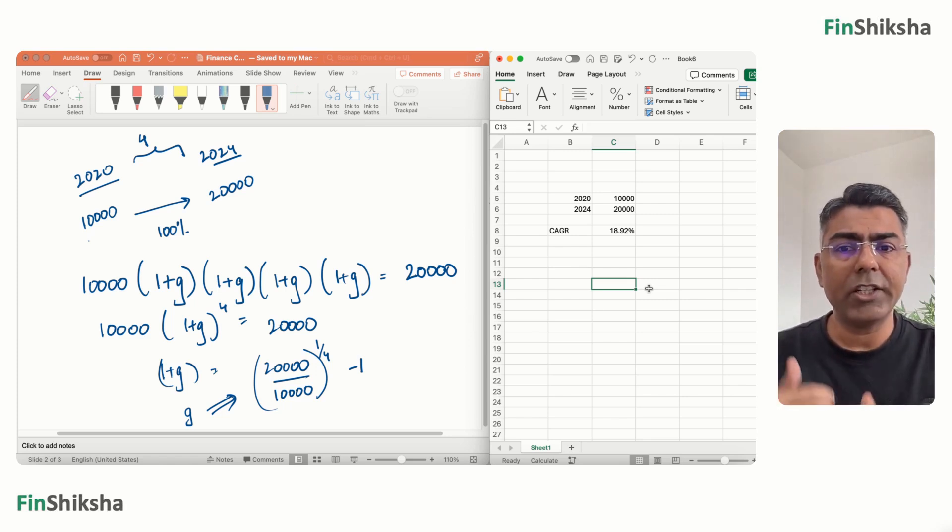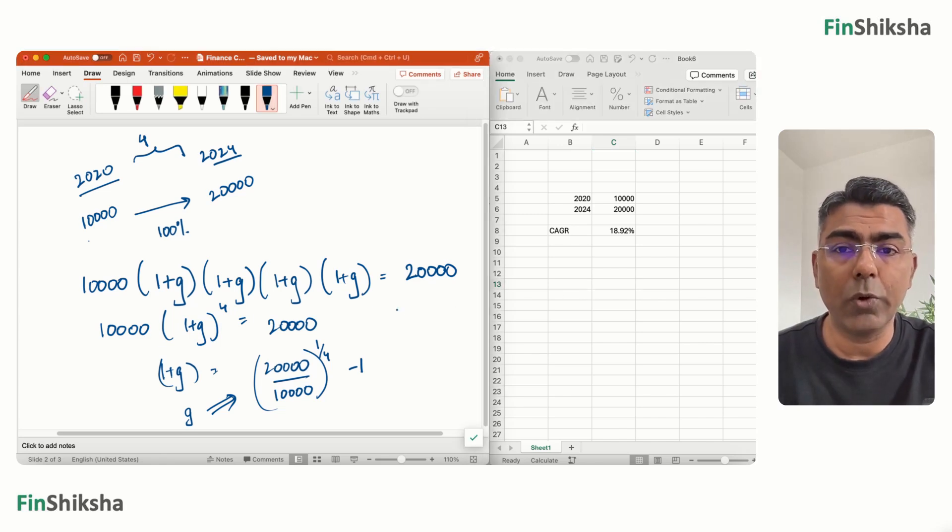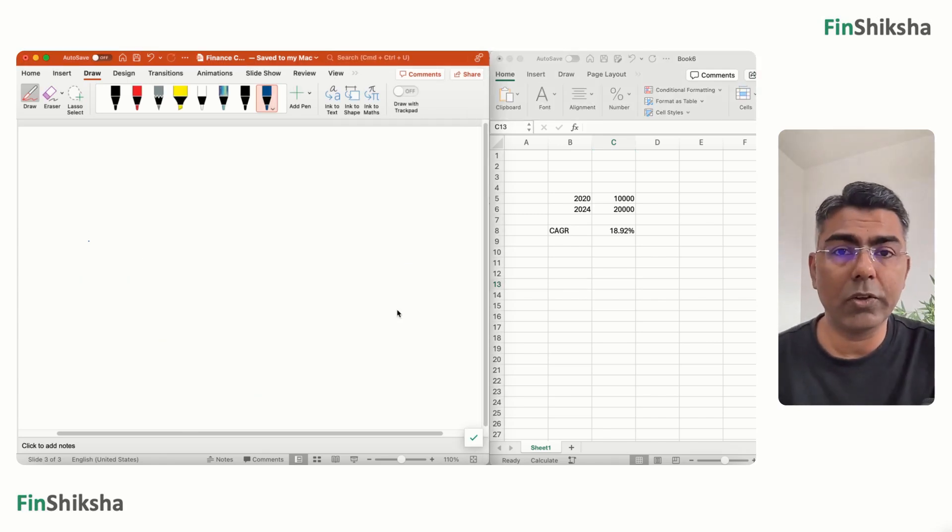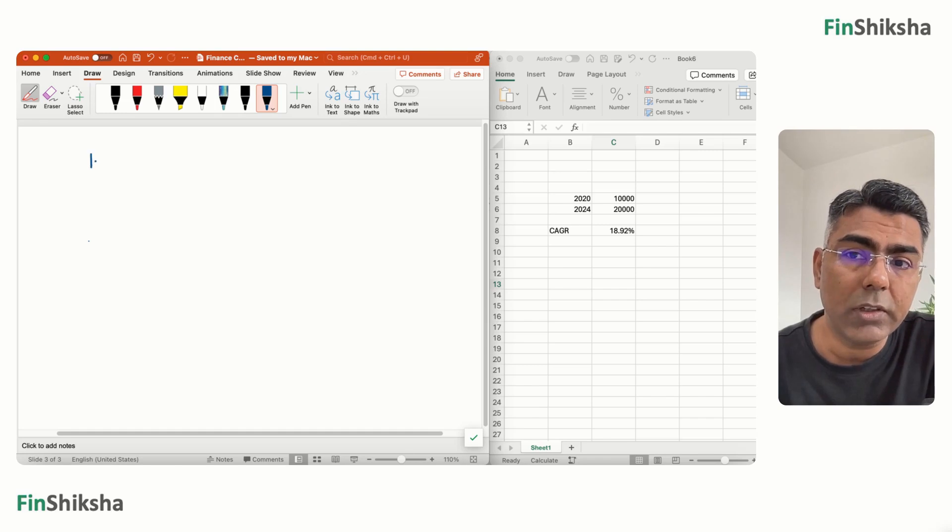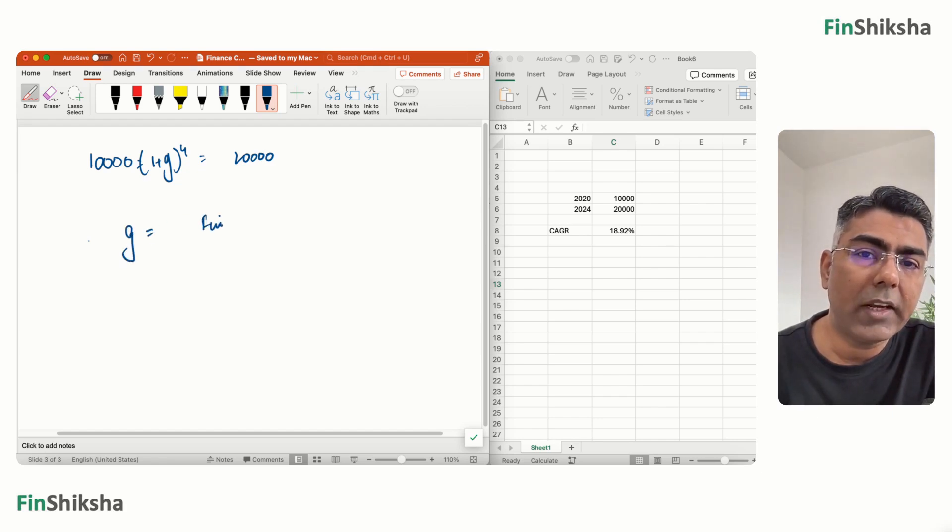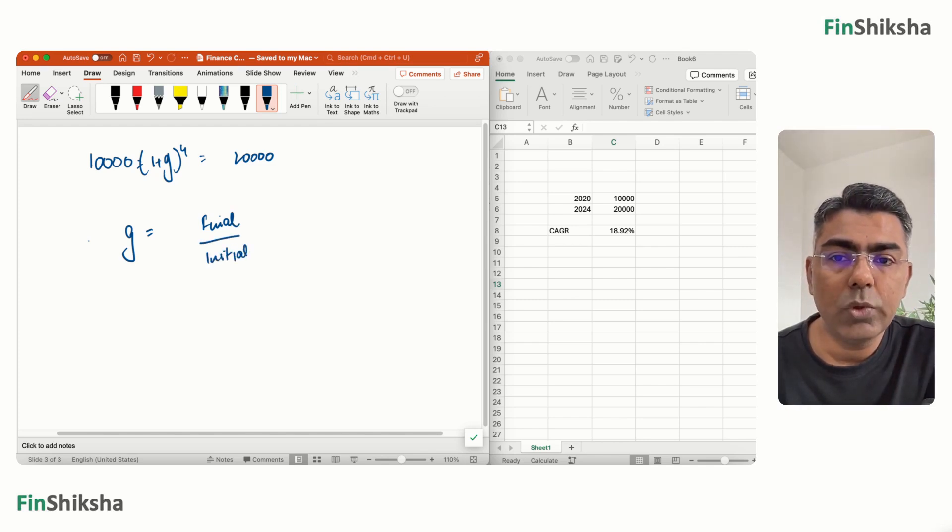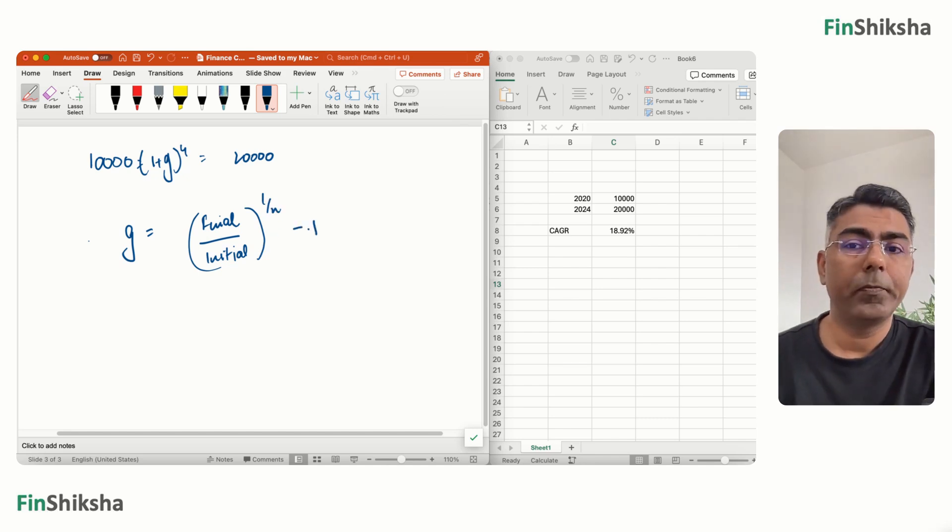Now of course, things can change and you could play out there, but we will try and generalize this concept. So how do you generalize this concept? To generalize the concept, remember we said 10,000 times (1+G) raised to the power 4 equals 20,000 and then we solve for G. If you remember, the solution for G was final value divided by initial value raised to the power 1 by N, N being the number of years, minus 1.